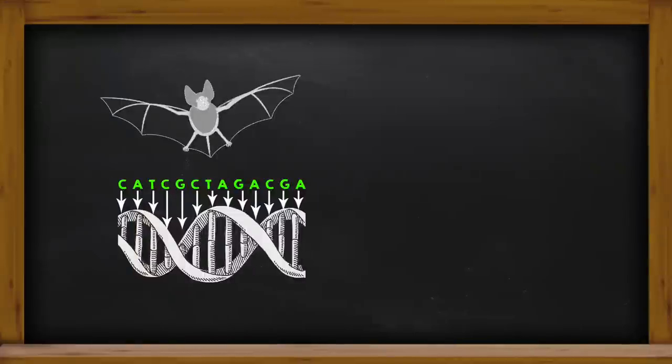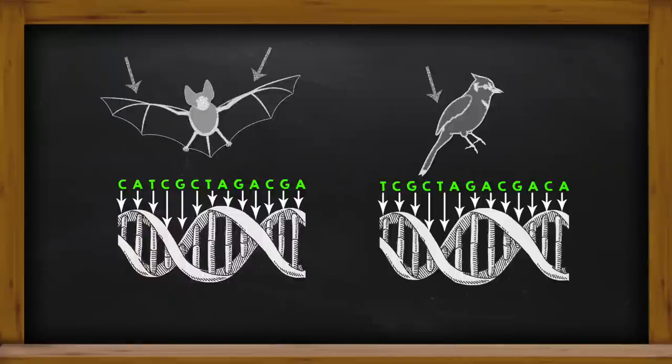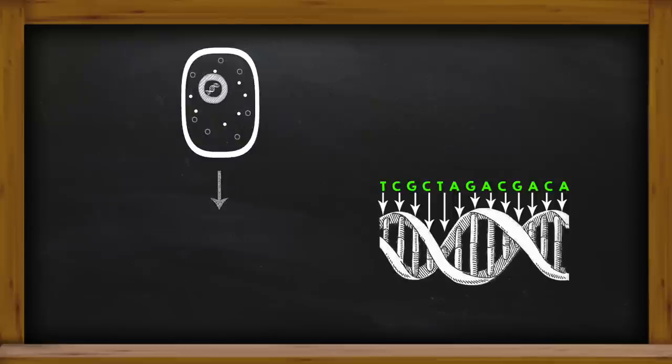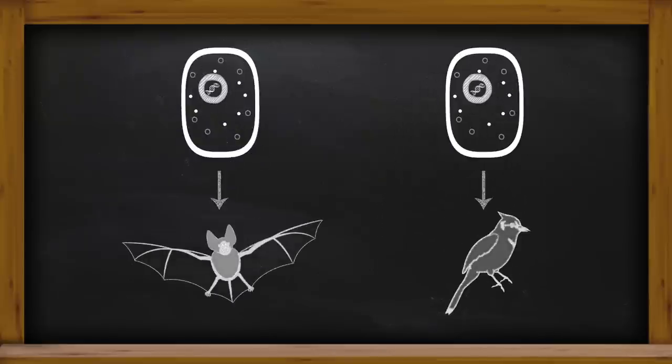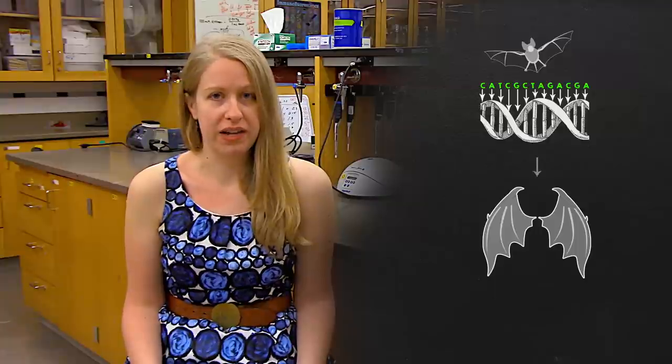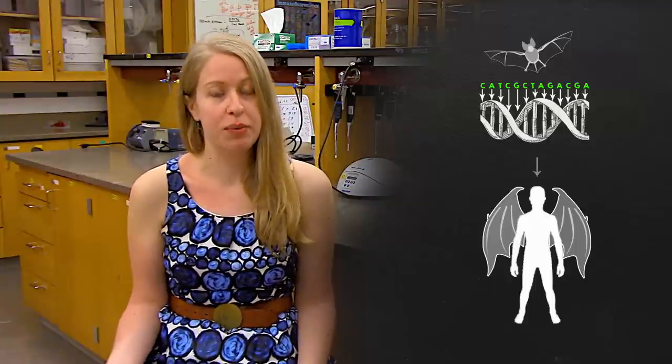But the genome of a bat or a bird do call for wings to be added to those animals when they develop from one bat cell to a baby bat or one bird cell to a baby bird. We don't know enough to do this yet, but sometime in the future we'll know enough about how to read genomes in order to identify the part of the bat genome that calls for wings and be able to take that piece of the bat genome and put it into the human genome.